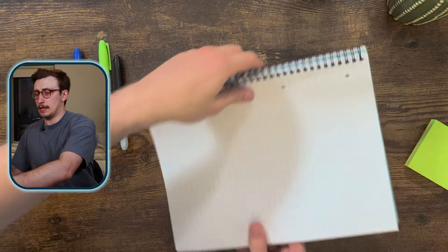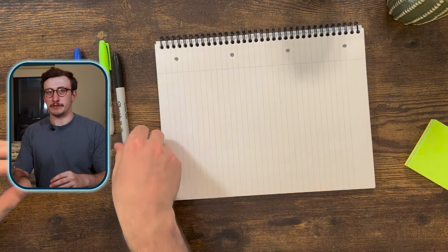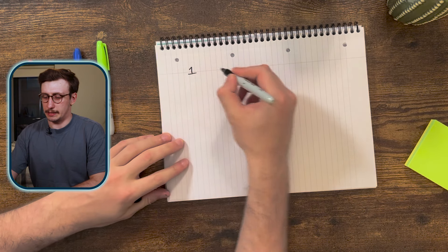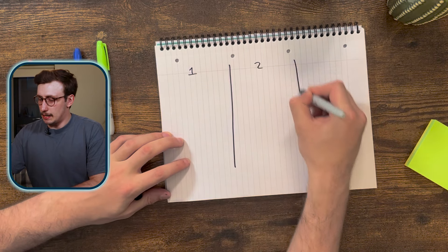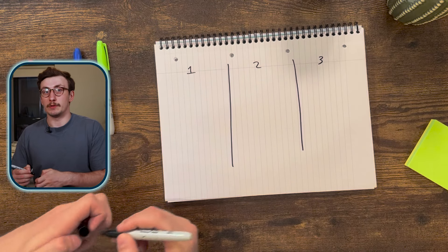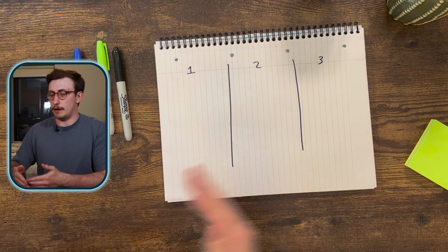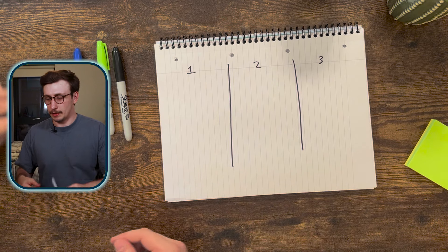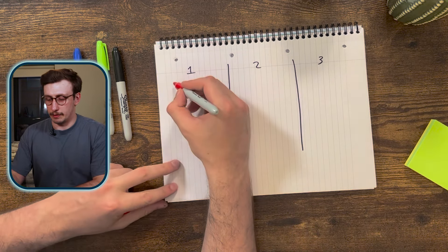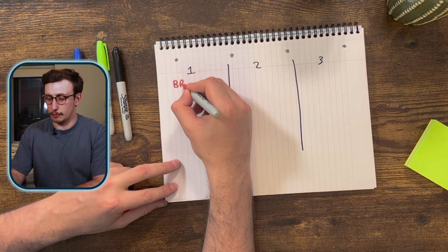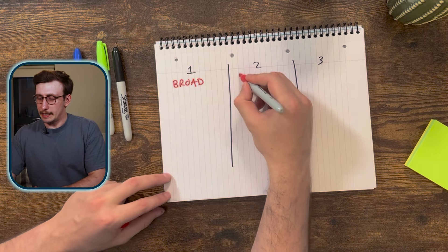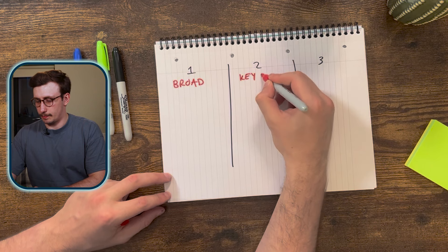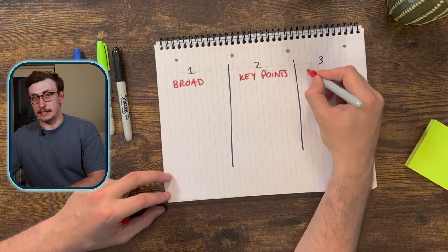The next piece of advice follows on from that reading order: use something called a three-pass approach. This breaks down reading papers into three separate passes — a broad or basic pass, a key points pass, and a detailed pass. Depending on what you want to get out of reading the paper, you can go as far through these passes as necessary.